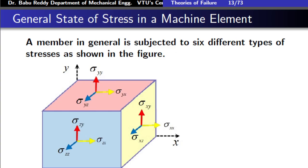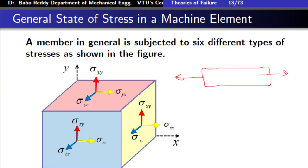Before we study the general state of stress, let us take a simple case of a bar subjected to axial load. Let it be subjected to a load P and let the cross-section area be A. If you want to find the stress, the axial stress, you can find sigma is equal to P by A.